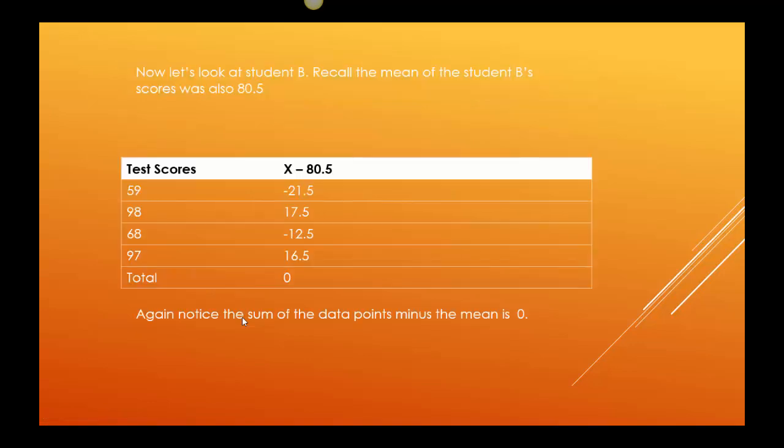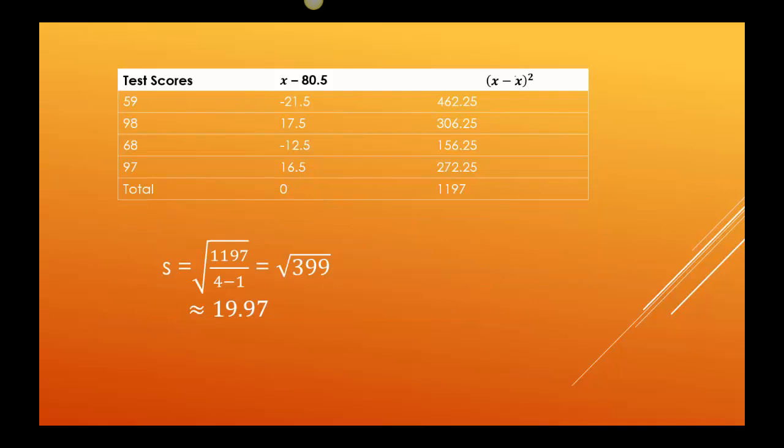So let's look at student B. I remember student B had a big difference in scores. So I'm doing exactly the same thing. I'm starting with my scores, and I'm, again, subtracting 80.5. So I have 59 minus 80.5 is negative 21.5. 98 minus 80.5 is 17.5. 68 minus 80.5 is negative 12.5, and 97 minus 80.5 is 16.5. Once again, if I were to add those values up, I would get zero, which is why I need to square them.